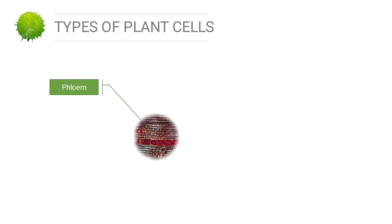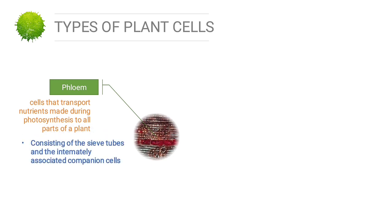The last type of plant cell is phloem. Phloem cells transport nutrients made during photosynthesis to all parts of the plant. They transport sap — a watery solution high in sugars — along a pressure gradient generated by osmosis, a phenomenon called translocation. Phloem consists of sieve tubes and the intimately associated companion cells, together with parenchyme cells, phloem fibers, and sclereids.